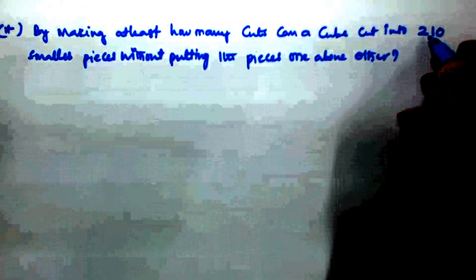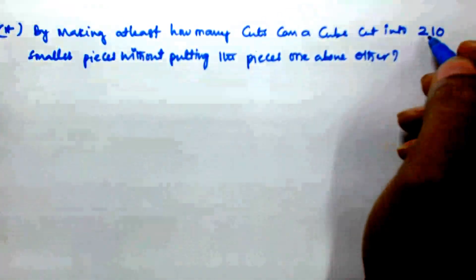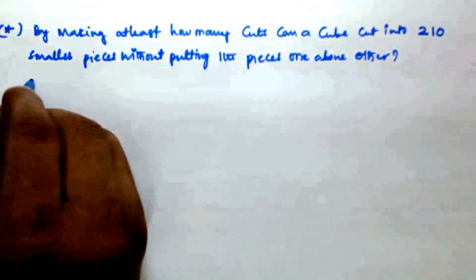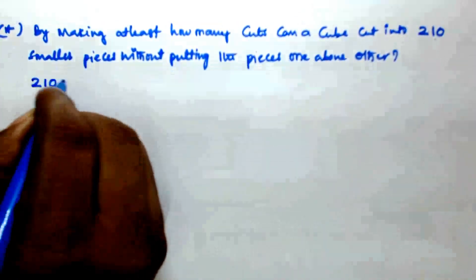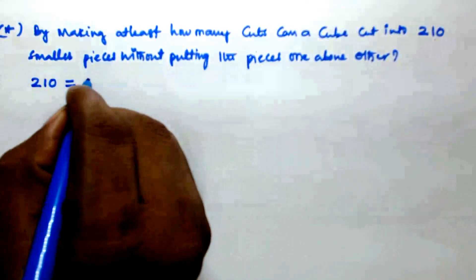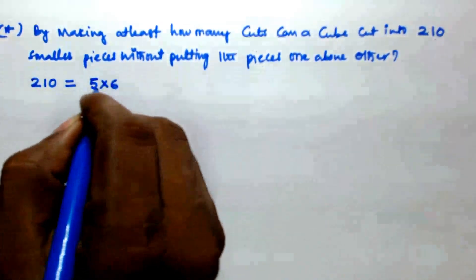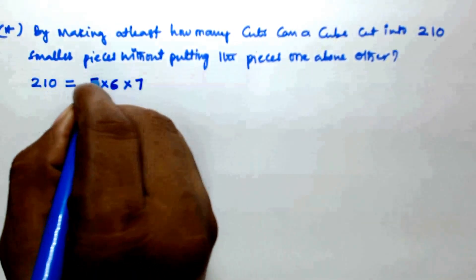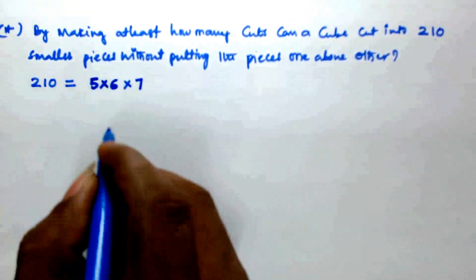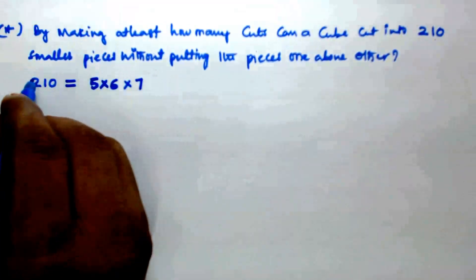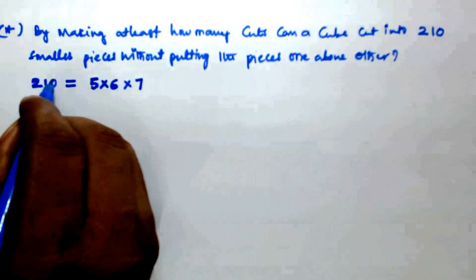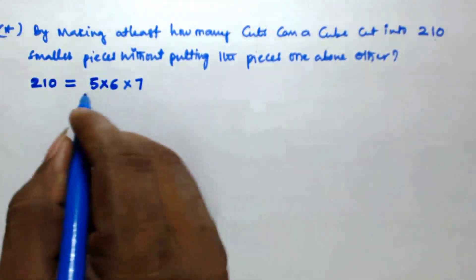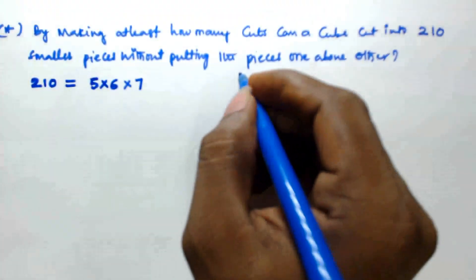Here also, the 210 pieces have to be equally distributed along length, breadth, and height. So 210 can be written as 5 × 6 × 7, because 5 into 6 into 7 equals 210.